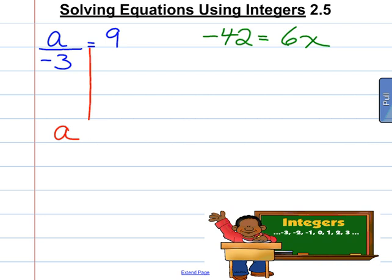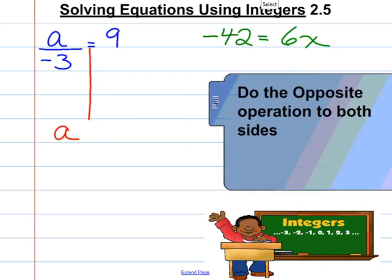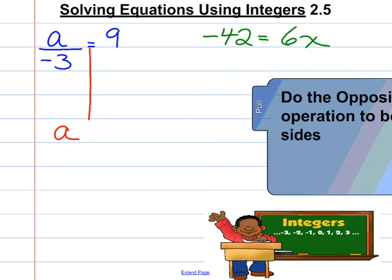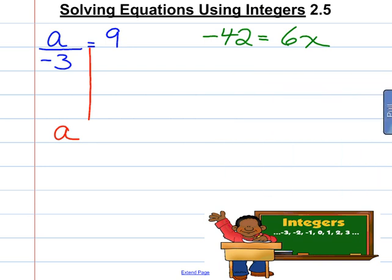Before I go any further, remember that you must do the opposite operation to both sides. So, if we have A divided by negative 3, the opposite operation of dividing is multiplying. The opposite of dividing by negative 3 is multiplying by negative 3. So, we're going to multiply both sides by negative 3.